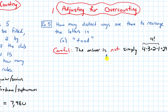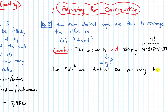So why is 24 not the right answer? It has to do with the fact that there are two O's in this word, and the O's are identical. So switching their order doesn't produce a new rearrangement.